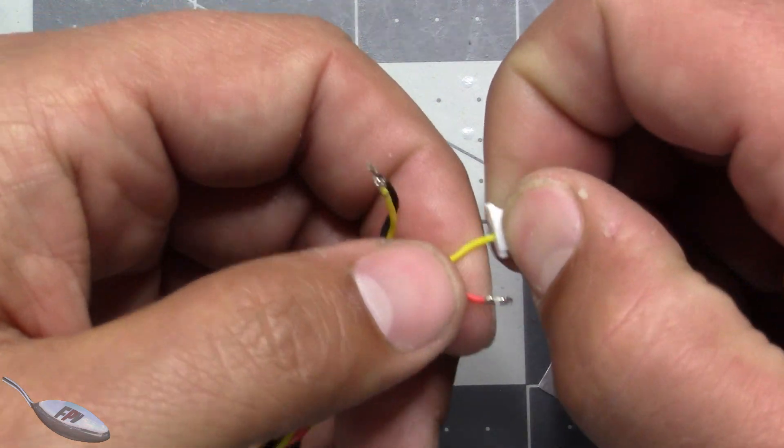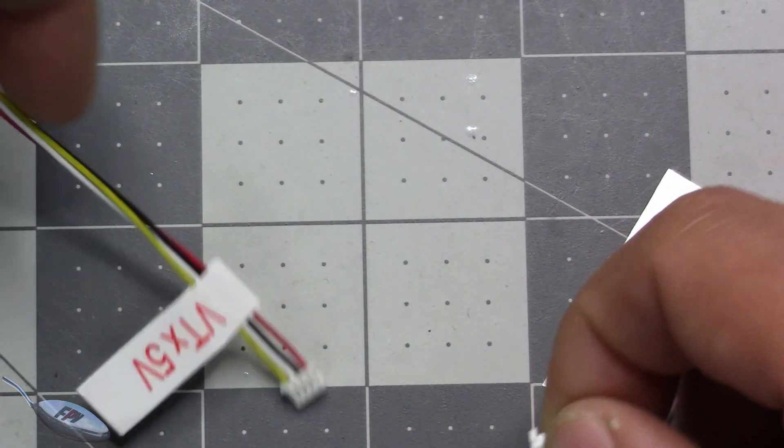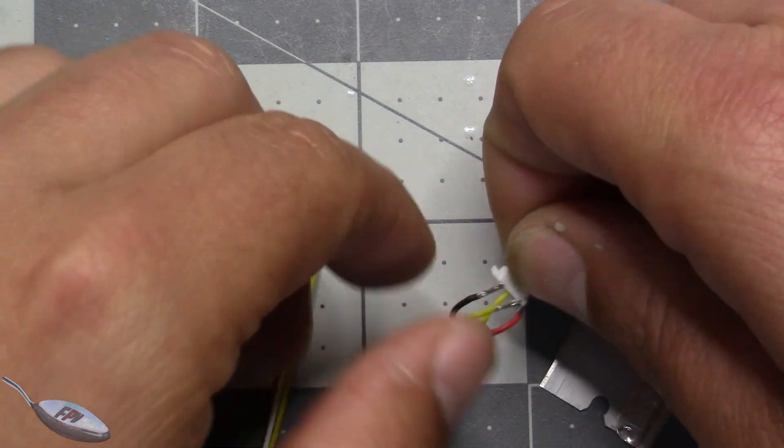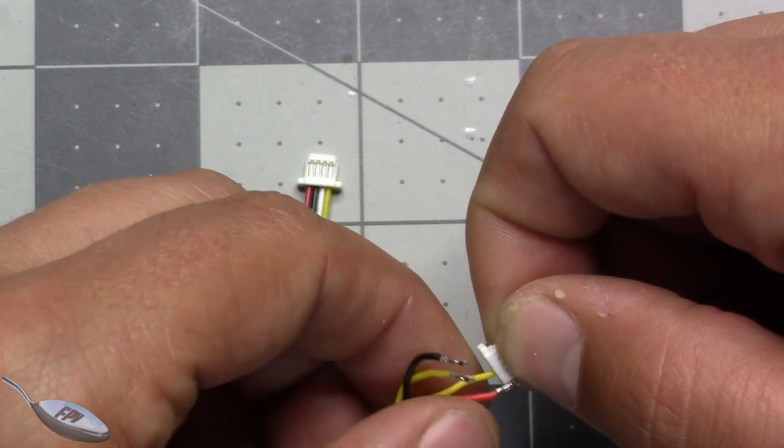So I got them all out. And now we just got to pull the factory one here and we look and we see that it goes red, black, white, yellow. So we're going to do just like that.